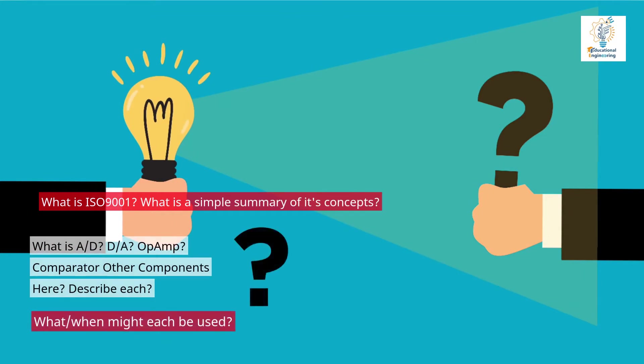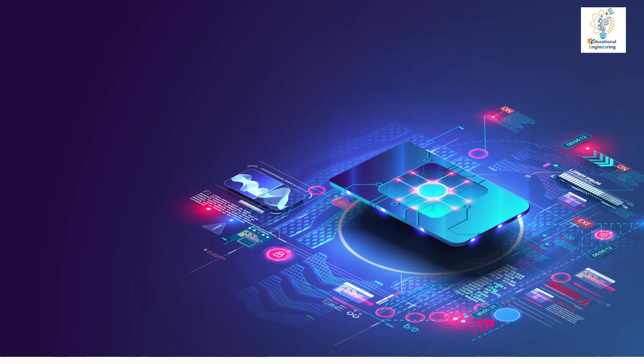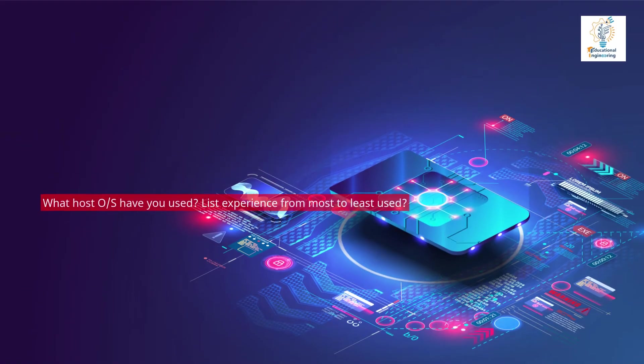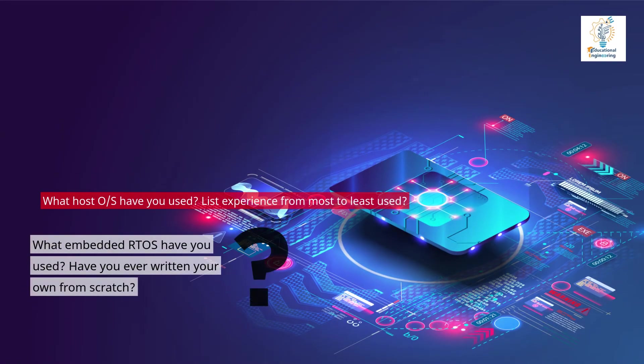What is an ADC? DAC? Op-amp? Compare it to other components. Describe each. What or when might each be used? What host operating systems have you used? List experience from most to least used. What embedded RTOS have you used?